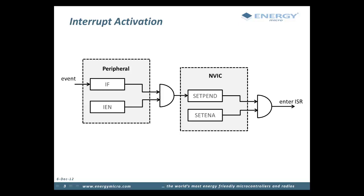If the IRQ event is enabled in NVIC, the CPU will then enter the interrupt handler. The interrupt state within the interrupt controller is handled automatically when the CPU enters and exits the interrupt service routine. On the other hand, the interrupt flag in the peripheral is only set by an event and must be cleared by software. On the next slides, we will see what the consequence of this is.